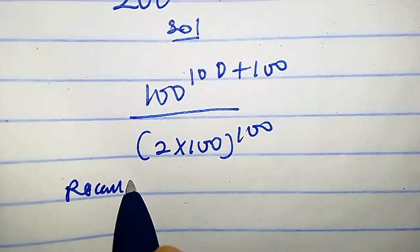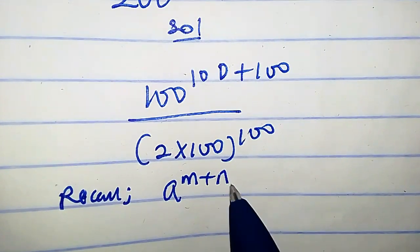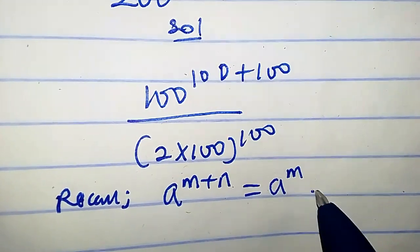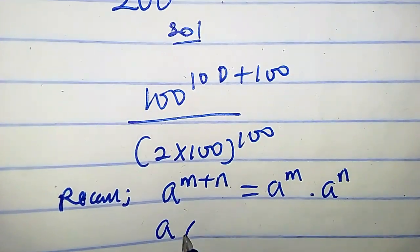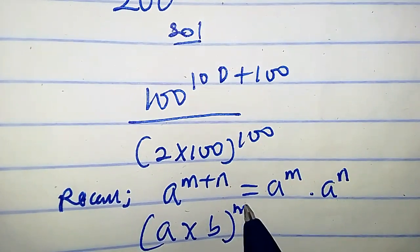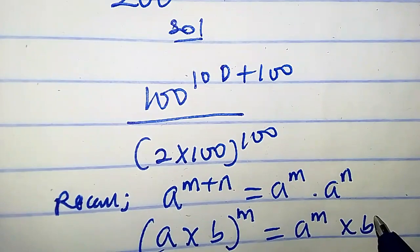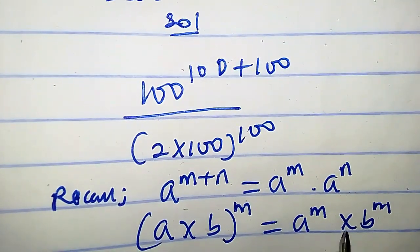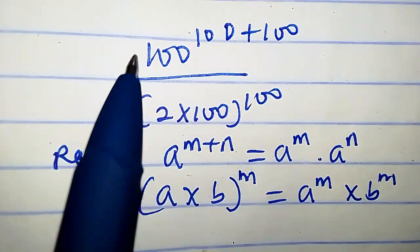Now let us recall some properties. First: a raised to the power m plus n is the same as a raised to power m times a raised to power n. The second property is that a times b, raised to power m, equals a raised to power m times b raised to power m — that is, when the exponent is the same, we can split it.